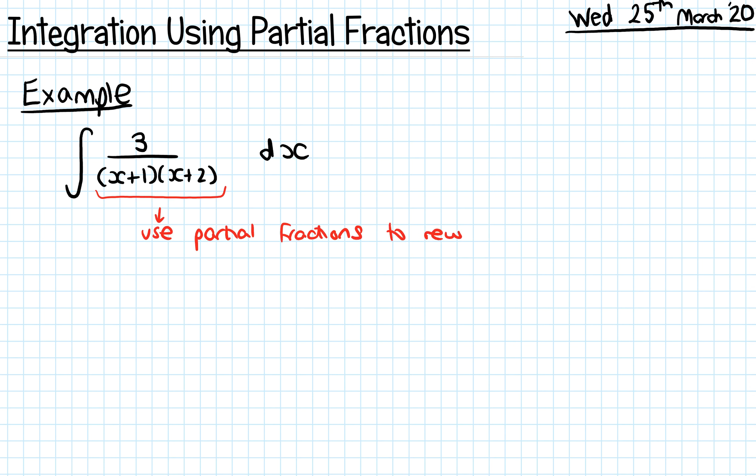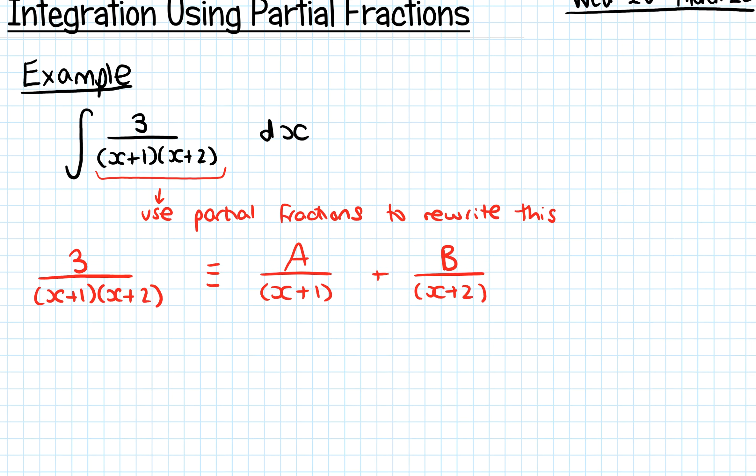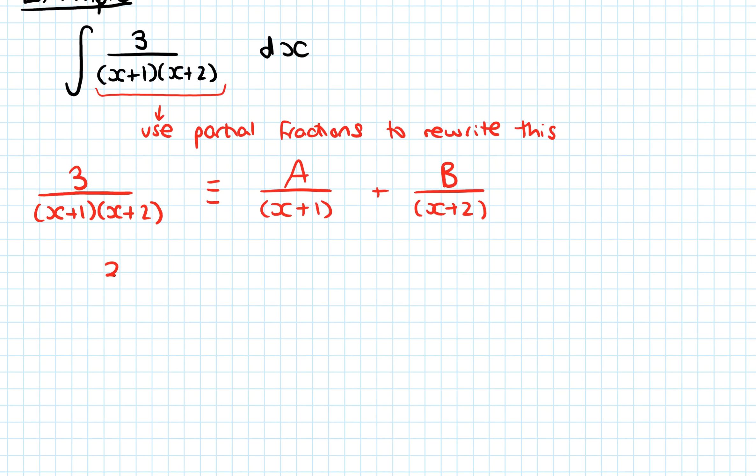So we want to rewrite this using those partial fractions that we did way back at the start of seventh form. If I rewrite this as partial fractions, we can write this as A over x plus 1 plus B over x plus 2. And if I imagine making this common denominator and solving it, I can say then 3 has to be equivalent to A times x plus 2 plus B times x plus 1.